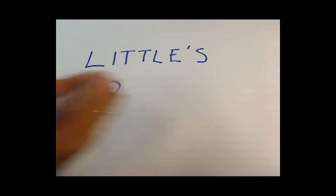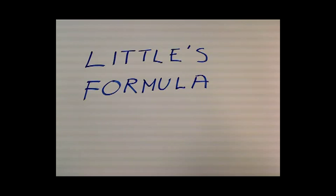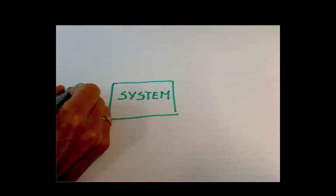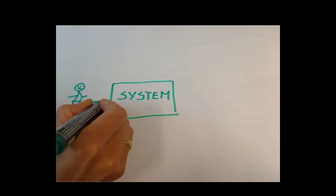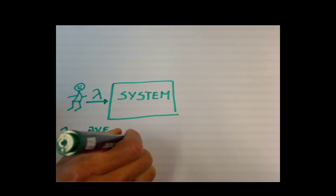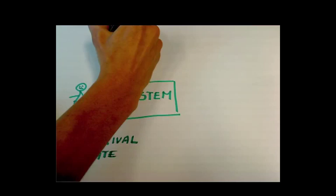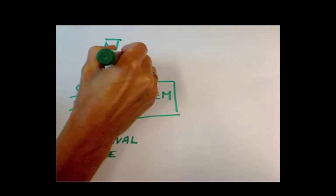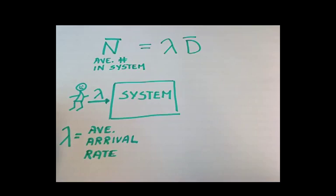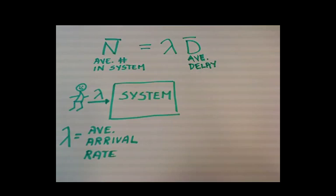Little's formula. We have a system and customers arrive to the system with an average arrival rate of lambda. The average number of customers in the system is then equal to lambda times the average time spent in the system.